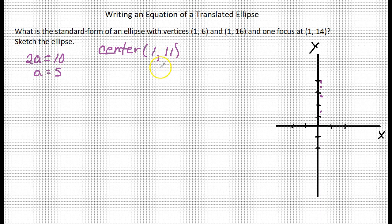Now we're going to start our formula for our ellipse. A translated ellipse with a vertical major axis, the formula is this: (x minus h) quantity squared over b squared plus (y minus k) quantity squared over a squared equals 1.